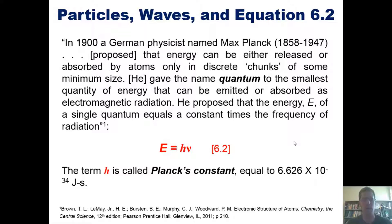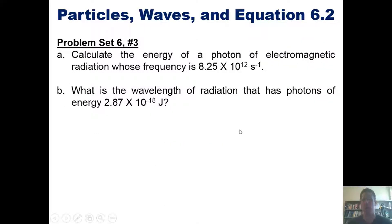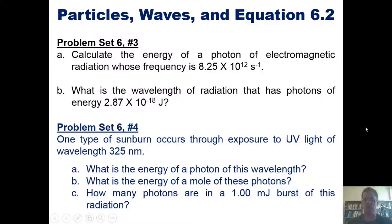Which brings us to some problems from our problem set. In part A, calculate the energy of a photon of electromagnetic radiation whose frequency is that number. Part B says, what is the wavelength of radiation that has photons of that energy? And another problem reads: one type of sunburn occurs through exposure to UV light of wavelength 325 nanometers. What is the energy of a photon of this wavelength? What is the energy of a mole of such photons? And how many photons are in a one millijoule burst of this radiation? I'm not going to do these problems in this video, but I will post a link somewhere on this slide which will take you to a separate video in which I've worked these out.